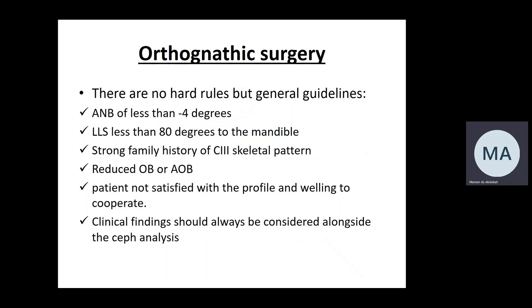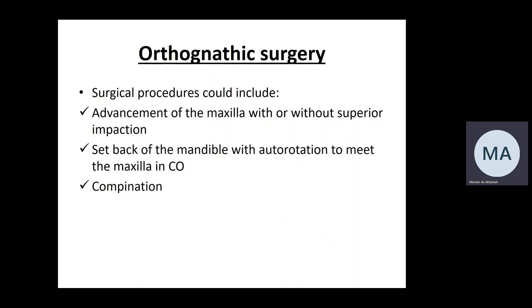There are no hard rules, but factors favouring surgery include: ANB less than minus 4 (severe); lower incisors at 80 degrees to the mandible indicating significant dento-alveolar compensation; a strong family history of Class III skeletal pattern; reduced overbite or anterior open bite with increased vertical proportions; and a patient who is clearly dissatisfied with their profile — the look of a prominent mandible or dished-in mid-face. These findings, alongside cephalometric analysis and extensive patient education and communication sessions, guide the treatment decision.